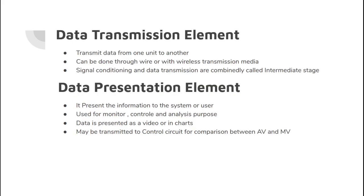Next we have the data transmission element, and as the name suggests, it transmits data from one unit to another unit. It can be done through wired or wireless transmission medium. Signal conditioning and data transmission are combined and called the intermediate stage. At the end we have the data presentation element, which is the output unit of the functional system.